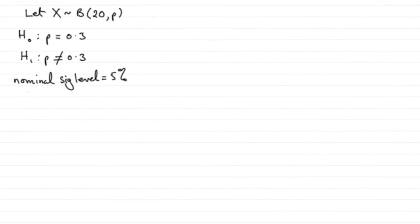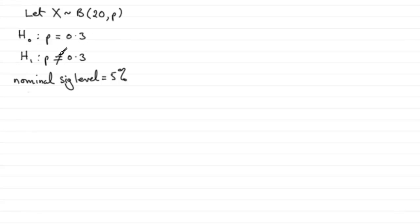Before we start this question, I've summarized what we're given. Let X be the random variable distributed binomially with n=20 and parameter P. The null hypothesis is P equals 0.3, and the alternative hypothesis is that P is not equal to 0.3. We're given a significance level of 5%, which I've called the nominal significance level.